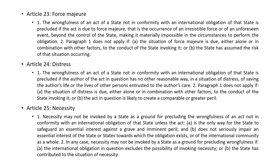Article 25 talks about necessity and says necessity may not be invoked by a state as a ground for precluding wrongfulness of an act not in conformity with an international obligation, unless the act is the only way for the state to safeguard an essential interest against a grave and imminent peril and does not seriously impair an essential interest of the state or states towards which the obligation exists or of the international community as a whole. In any case, necessity may not be invoked if the international obligation in question excludes the possibility of invoking necessity, or the state has contributed to the situation of necessity. These are the methods under which a state can preclude any wrongful act.